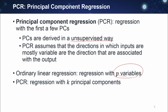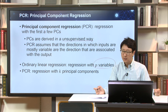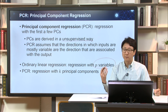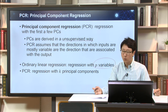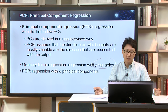Ordinary linear regression uses p variables. However, PCR is a regression with the first k principal components. So if we use more and more principal components, the model becomes more and more flexible. In principal component regression, the number of principal components k is the control for flexibility.